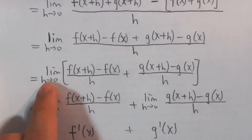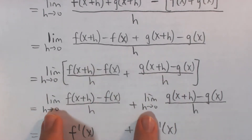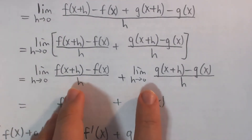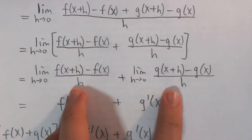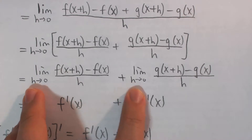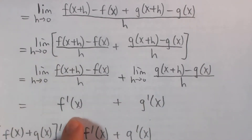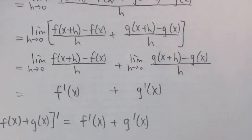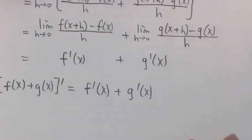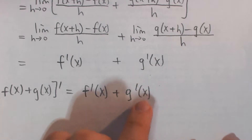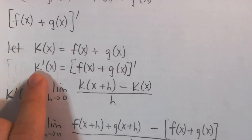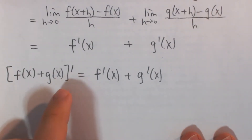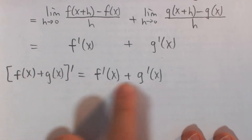We know that the limit of a sum is the sum of the limits. We can split this into two separate limits, both as h approaches zero. The limit on the left is the derivative of f, and the limit on the right is the derivative of g, by the limit definition of derivative. So the derivative of k of x equals f prime of x plus g prime of x — the derivative of a sum of two functions is the sum of the derivatives.